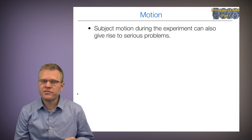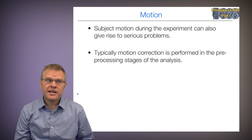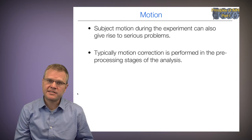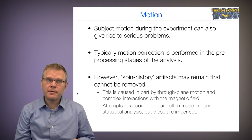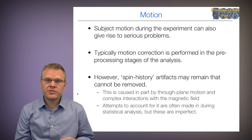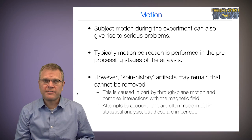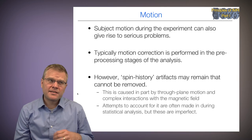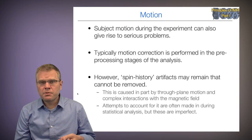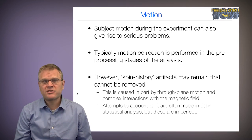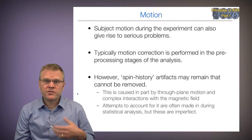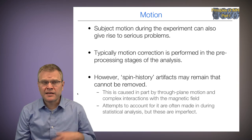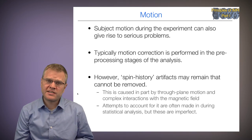Subject motion during the experiment can also give rise to serious problems, and motion correction is performed in the preprocessing stages of the analysis. However, there remain some effects of motion even after motion correction, and this is due to so-called spin history artifacts. Spin history artifacts are caused by through-plane motion and complex interactions with the magnetic field. So even though we correct for motion, there still remains some motion-related artifacts in the brain, and it's important we account for them in our statistical analysis.